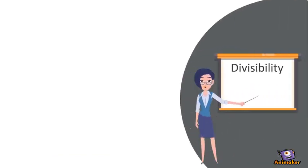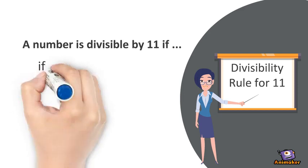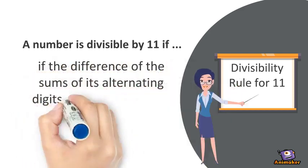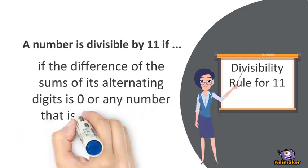Let's now have the divisibility rule for 11. A number is divisible by 11 if the difference of the sums of its alternating digits is 0 or any number that is divisible by 11.